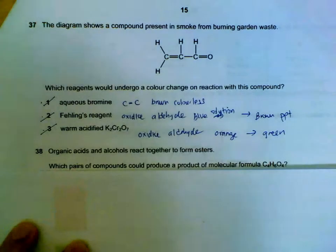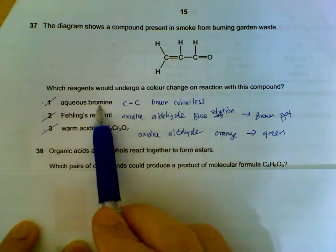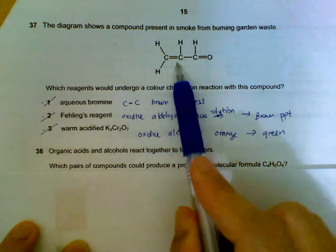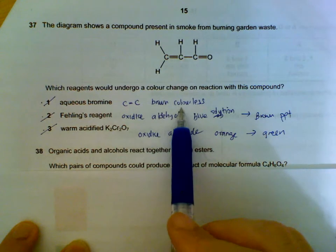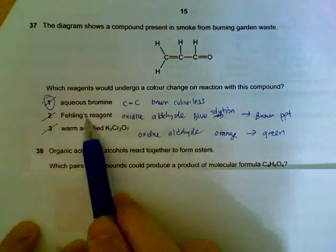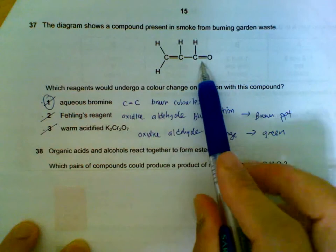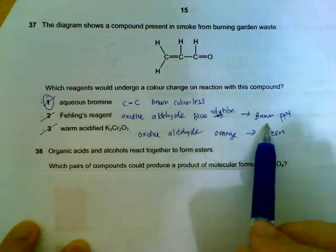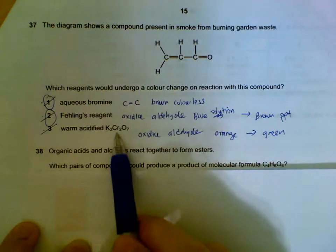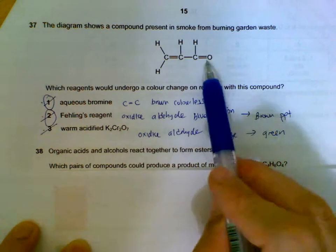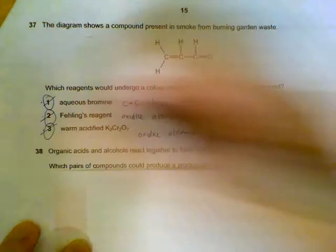37. Which one will cause a color change? Aqueous bromine will react with this double bond and your brown color bromine solution will become colorless. Fehling's reagent is blue solution. It will oxidize your aldehyde and then we will get a brown precipitate. Dichromate, orange color, it will oxidize your aldehyde. It will then become green color. So all statements are correct.